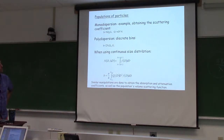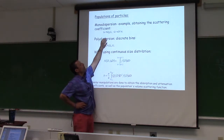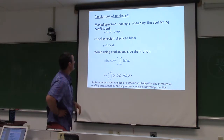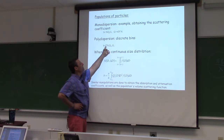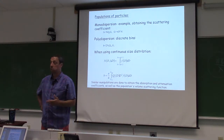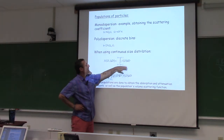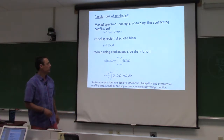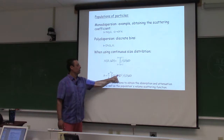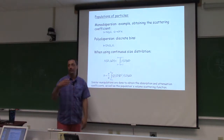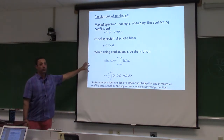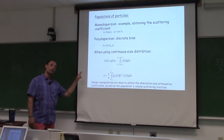Absorption and beam attenuation cross-sections are each Q times geometric cross-section times one particle per meter cubed, yielding units of m⁻¹. The cross-section value represents the attenuation, absorption, or scattering of a single particle in a meter cube. For a population of particles all the same size, multiply by n — the number of particles per meter cubed. For a polydispersion, sum the Q values associated with different sizes times their cross-sections. For a continuous size distribution, perform numerical integration. Mie theory gives exact results for a sphere; there are also approximations to Mie theory.